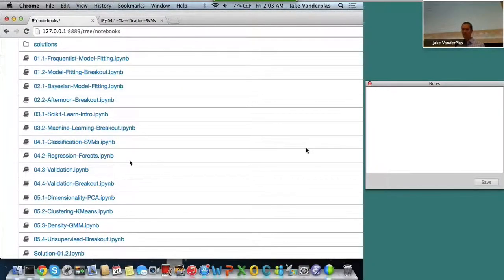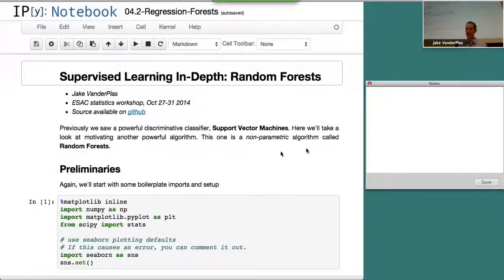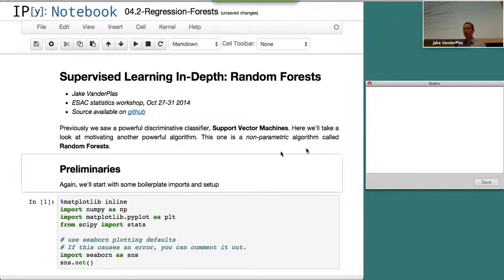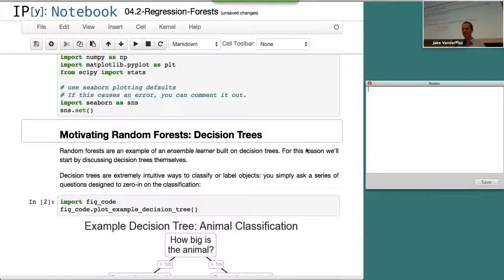So let's move on and take a look at random forests. It's 4.2. This is another method that's incredibly useful and has been applied in astronomy a lot. You can look up random forests on ADS and you'll find a lot of different things. So random forests are another method that is really nice and intuitive.